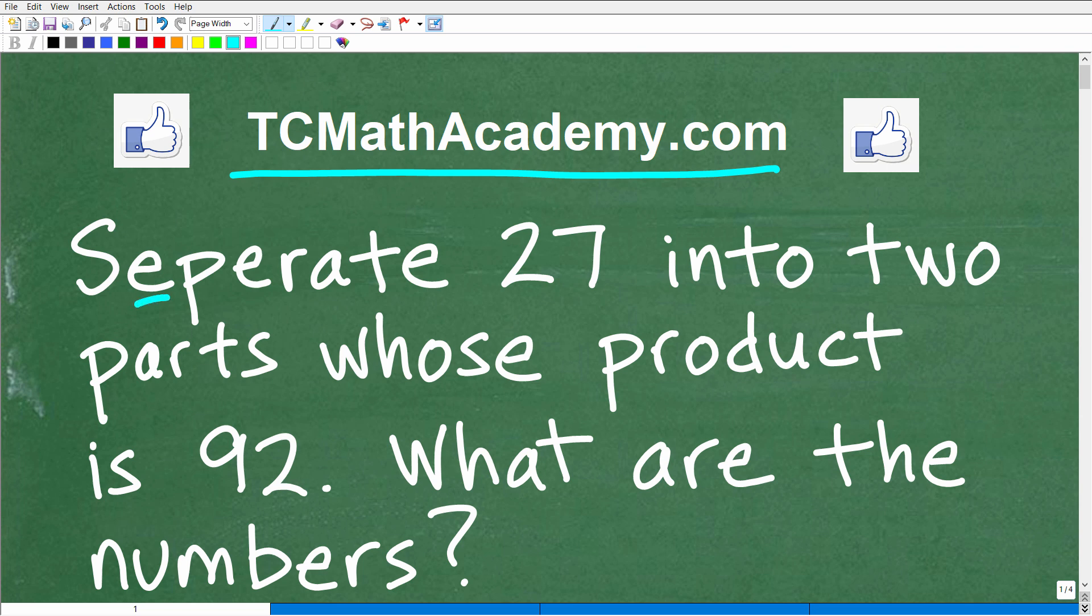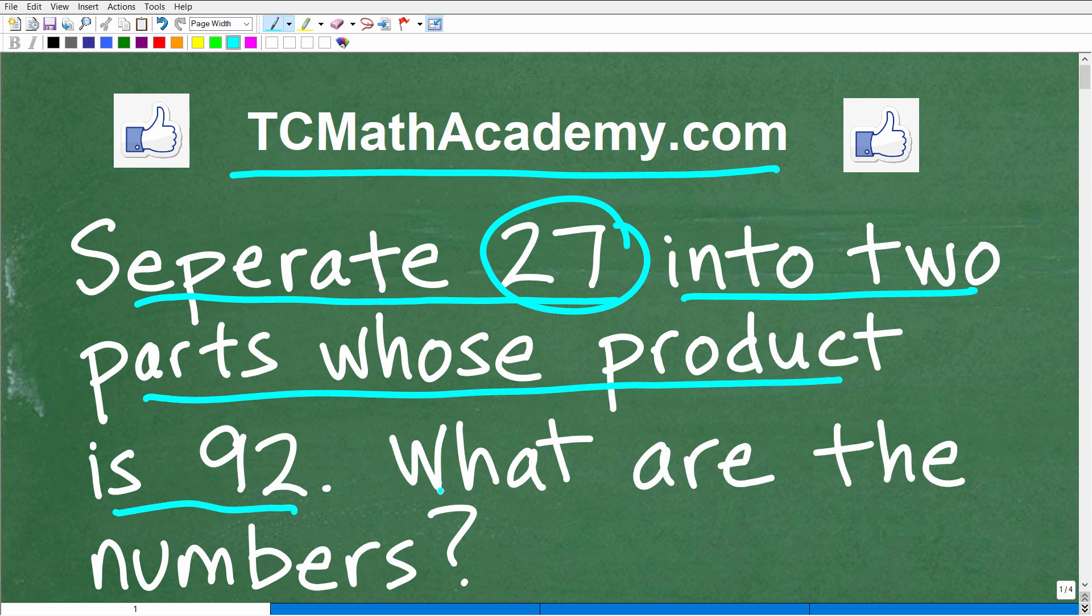So let's go ahead and read the problem. It says, separate 27, the number 27, into two parts, i.e. two numbers, whose product is 92. What are the numbers?